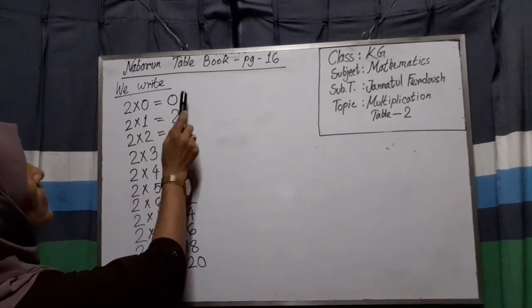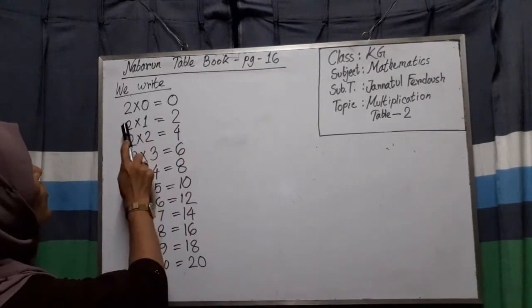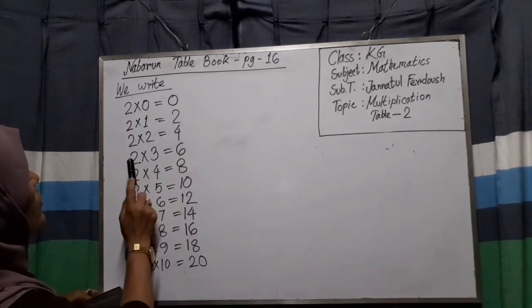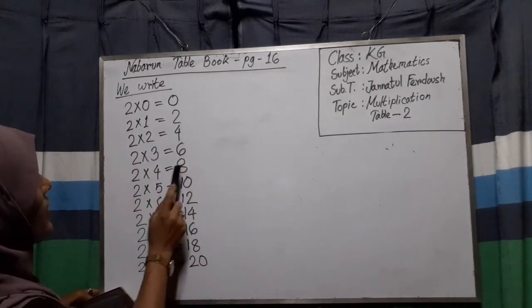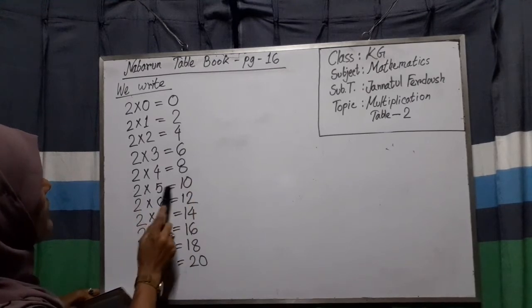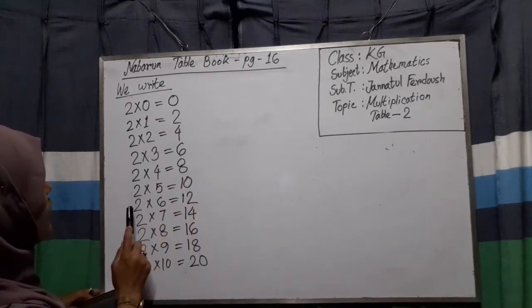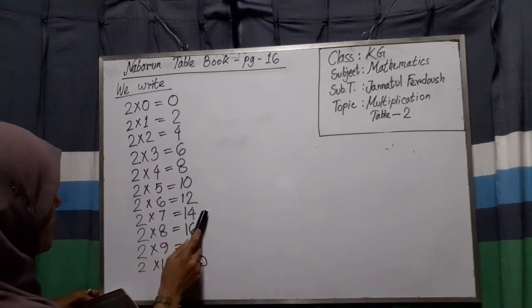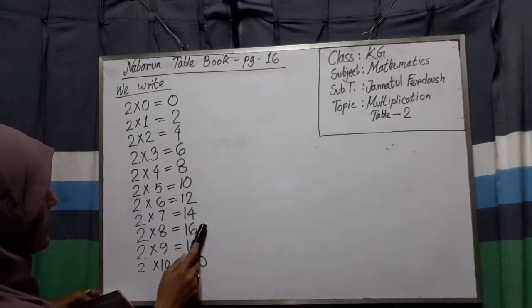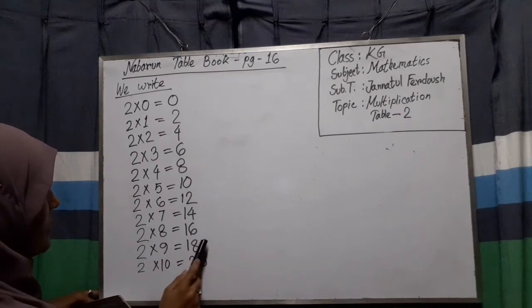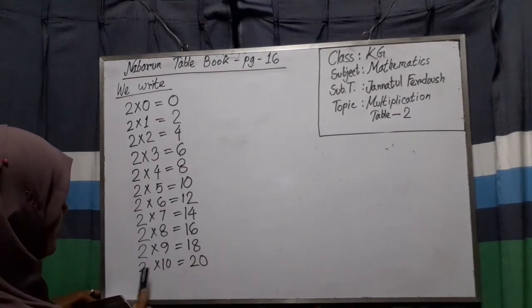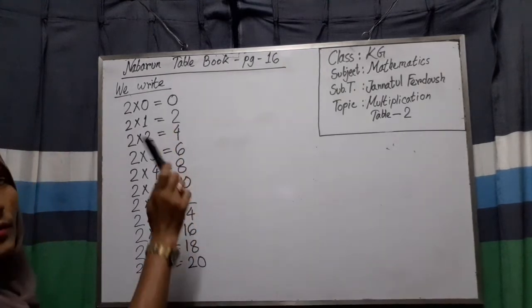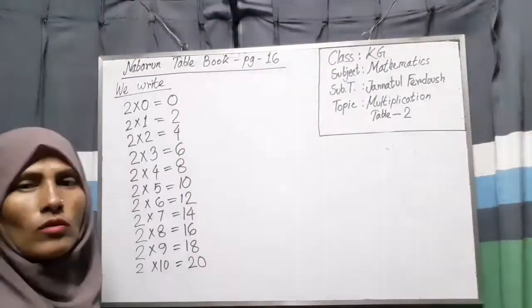Two times zero equals zero. Two times one equals two. Two times two equals four. Two times three equals six. Two times four equals eight. Two times five equals ten. Two times six equals twelve. Two times seven equals fourteen. Two times eight equals sixteen. Two times nine equals eighteen. Two times ten equals twenty. Okay, so that's how we do the multiplication of two.